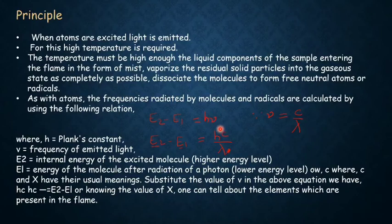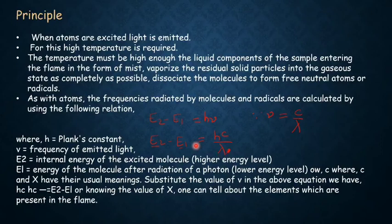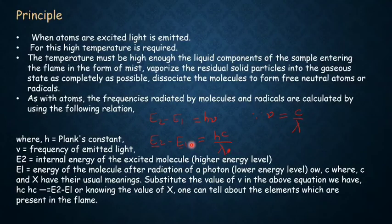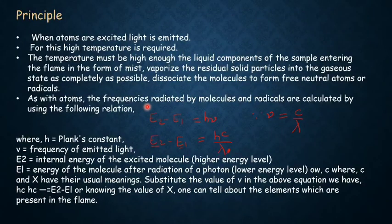Since ν = c/λ, substituting gives: E₂ − E₁ = hc/λ, where c is the velocity of light and λ is the wavelength of radiation. This is the principle of flame emission spectroscopy — by using this formula we can determine the frequency radiated by the molecules.